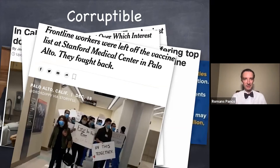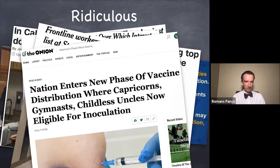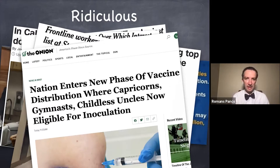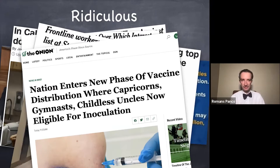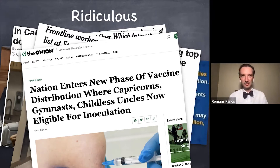A bonus limitation of the current system is that it's a little ridiculous — it actually featured in the humorous magazine The Onion, which says: 'The nation enters a new phase of vaccine distribution in which Capricorn gymnasts and childless uncles are now eligible for inoculation.' That's supposed to be hilarious because of how arbitrary, narrow, and convoluted the system's priorities seem to be. Ridiculous is a problem because it undermines the legitimacy of the government, and if you believe government has a useful role to play in society, that's a loss.